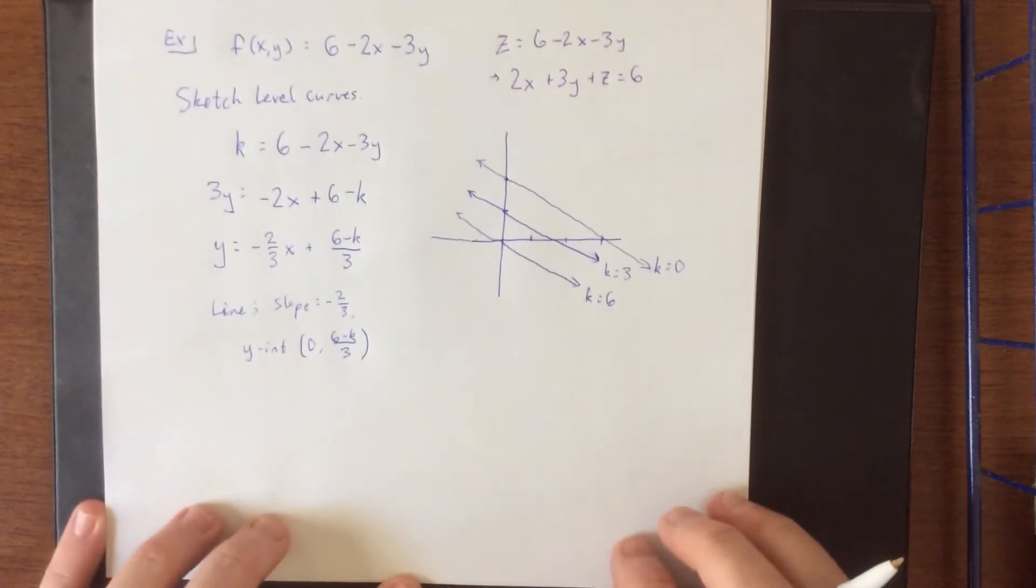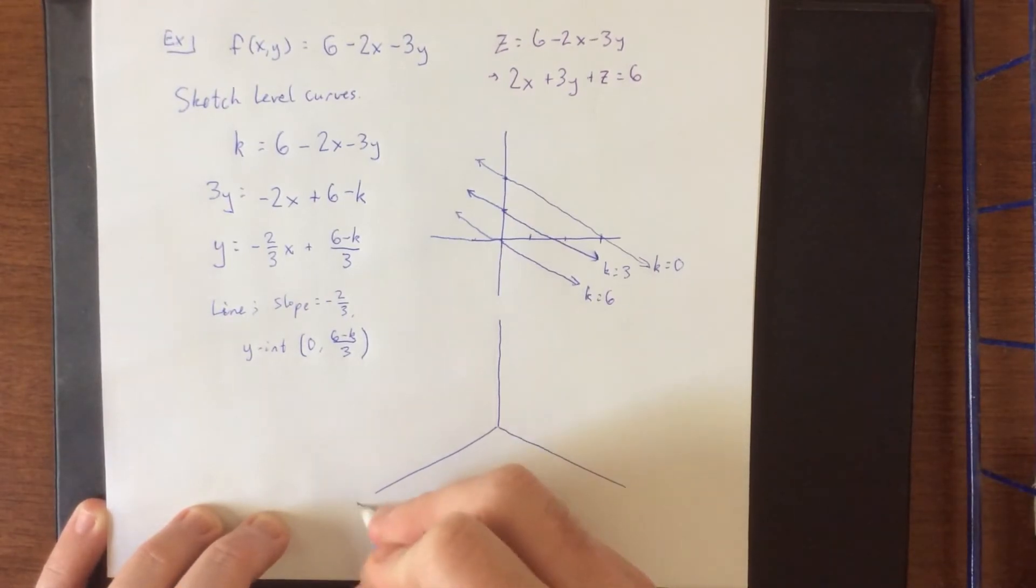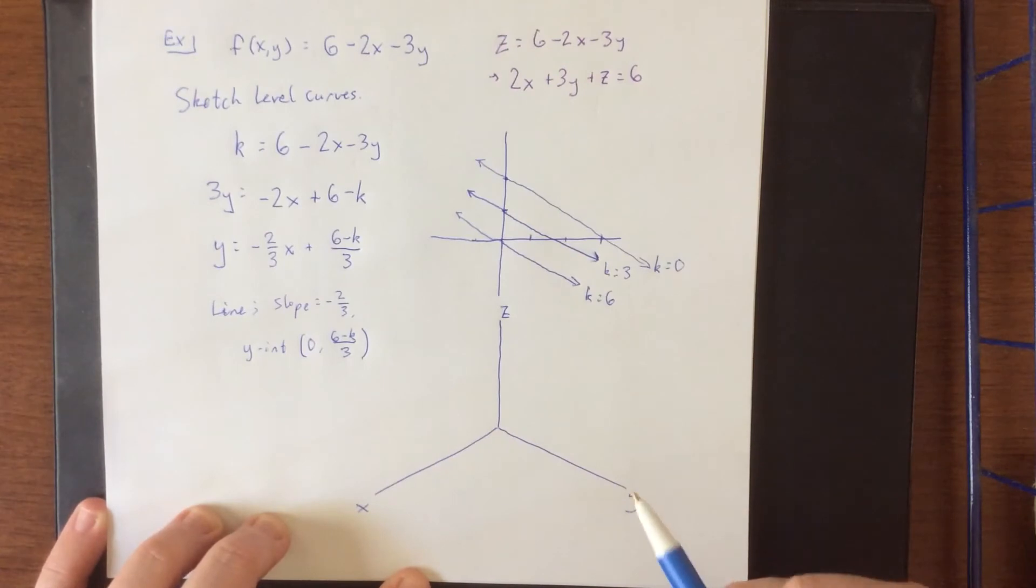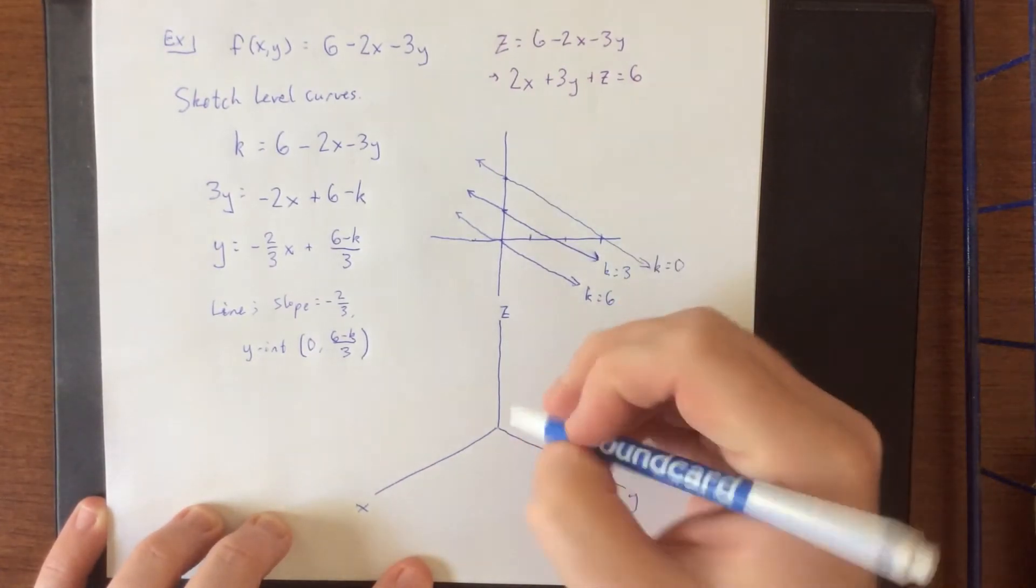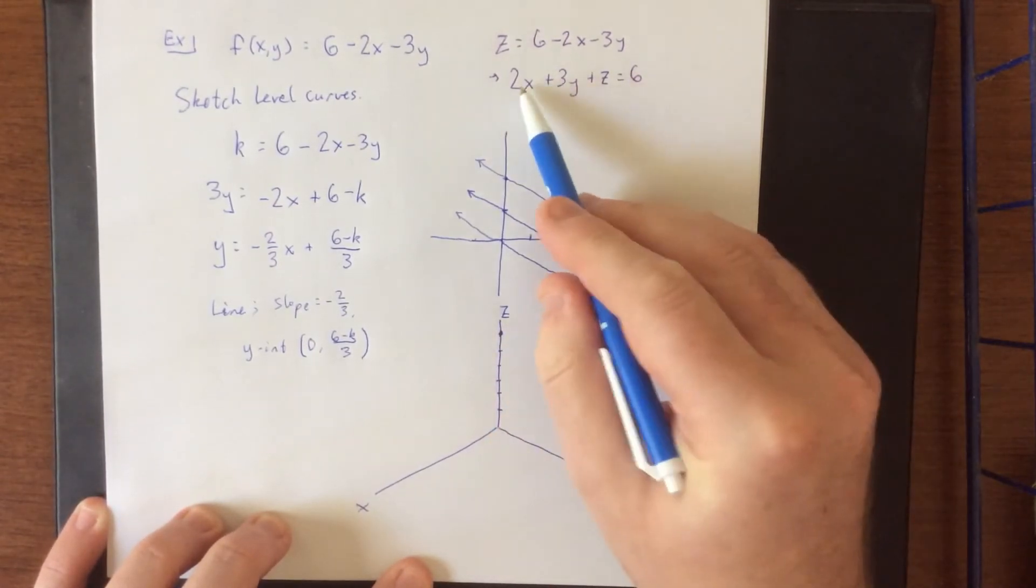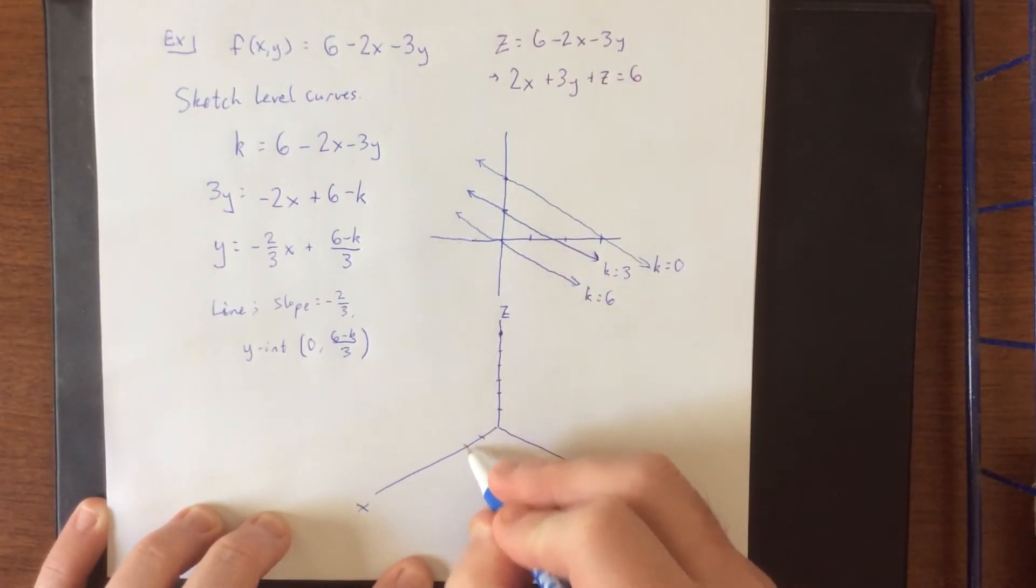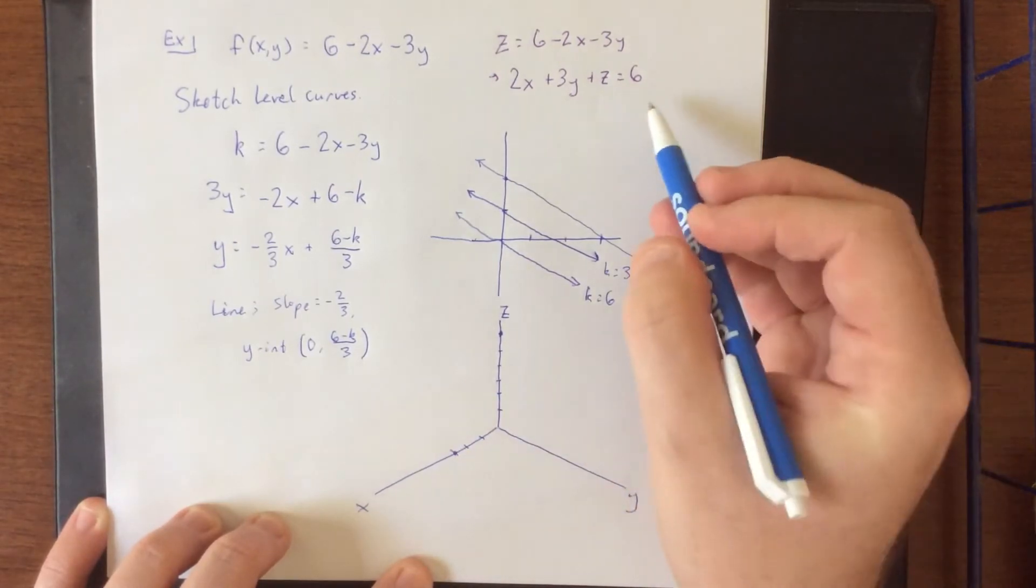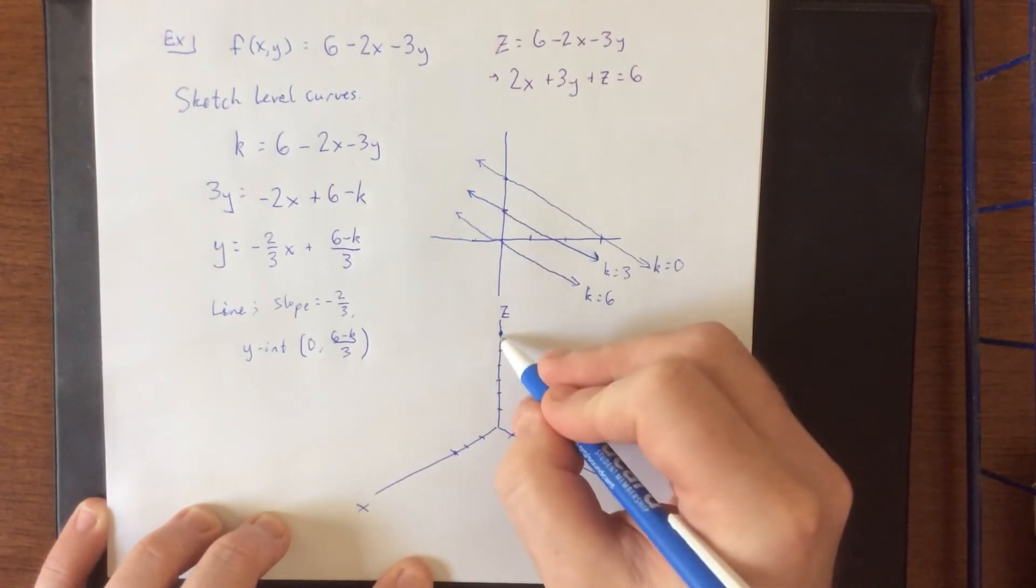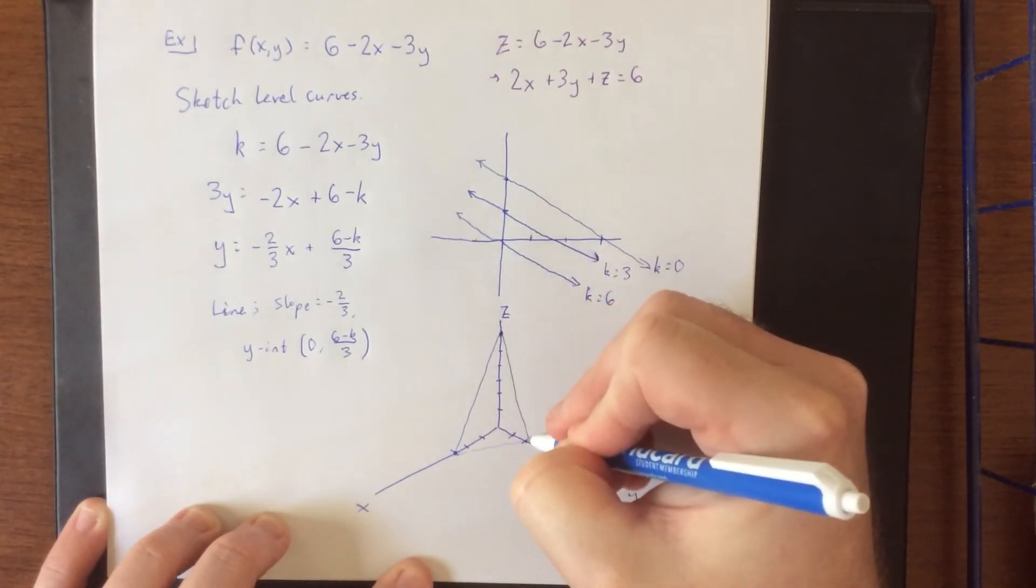Now, as a reminder from our topic on lines and planes, if I wanted to actually draw this thing in three dimensions, I think that I could let you know what these lines would correspond to in three dimensions. So, first off, heading back to this equation, we can get some intercepts for the plane. The z-intercept would be 6. We get that by setting x and y equal to 0. If we set y and z equal to 0, we'll get an x-intercept of 3. And if we set x and z equal to 0, we'll get y equals 2, which would be a y-intercept of 2. So, the outline of the plane in just the first octant would look like this.